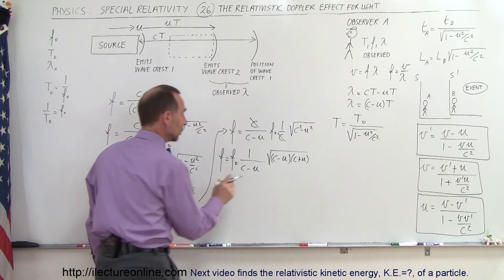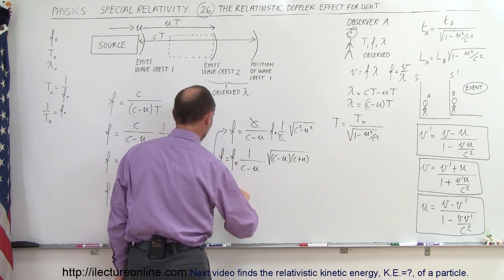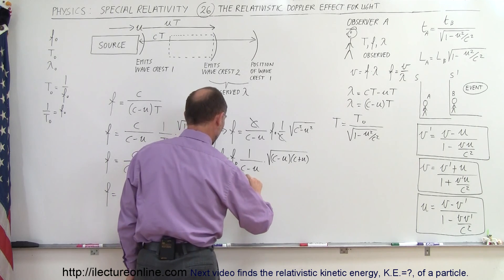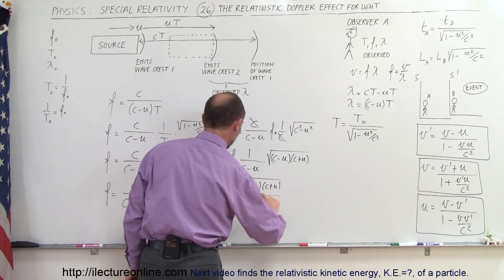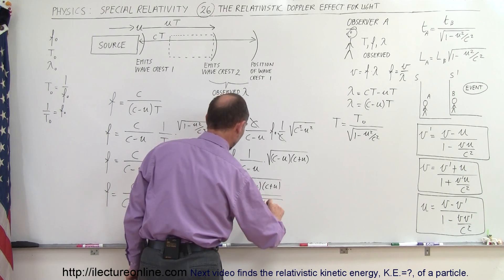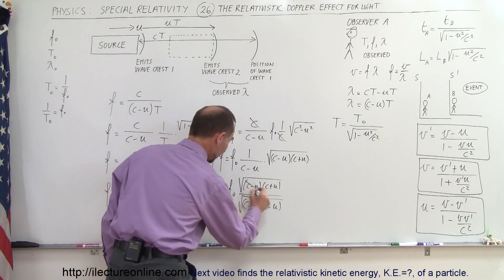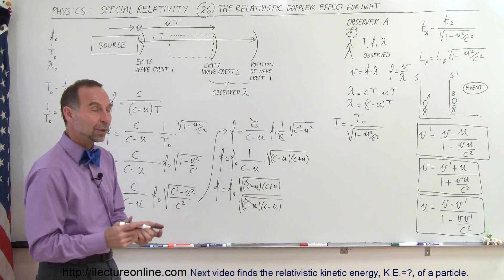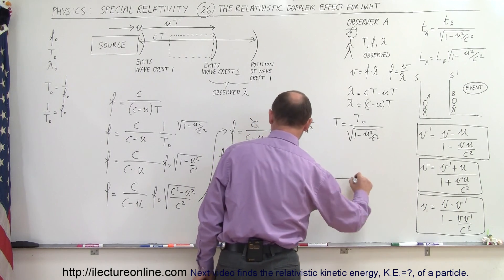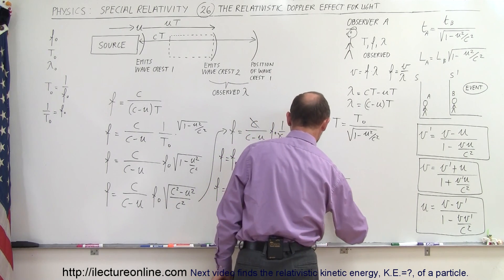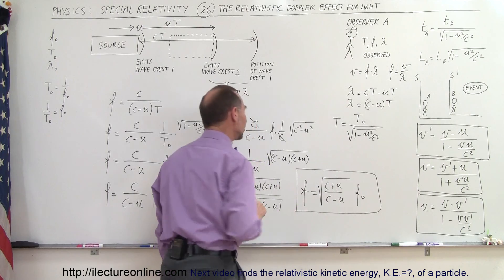We write the (c minus u) in the denominator as a squared term under the radical: f equals f₀ times the square root of (c minus u)(c plus u) divided by the square root of (c minus u)². We cancel one factor of (c minus u) from numerator and denominator, and finally we arrive at the final form.